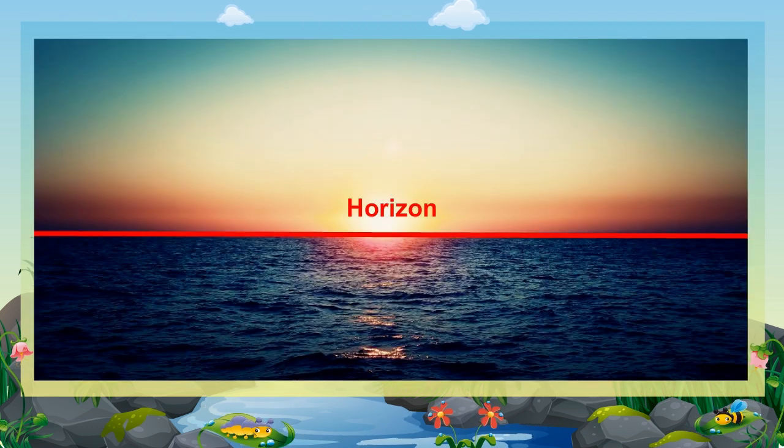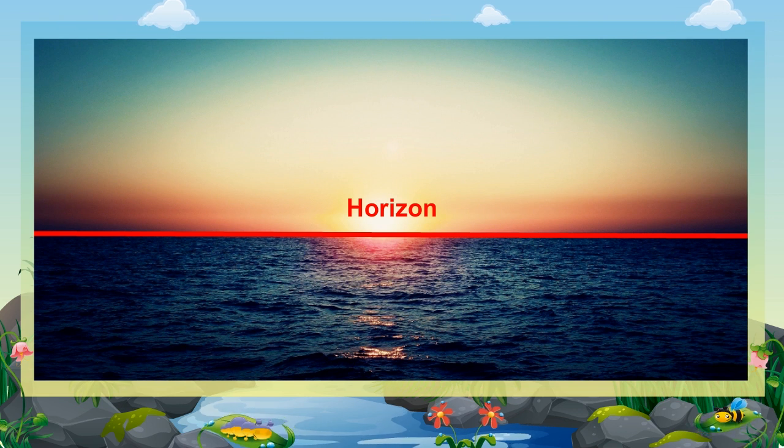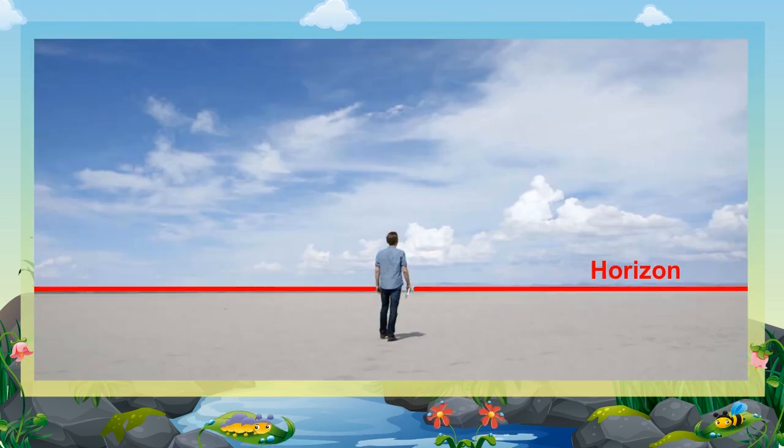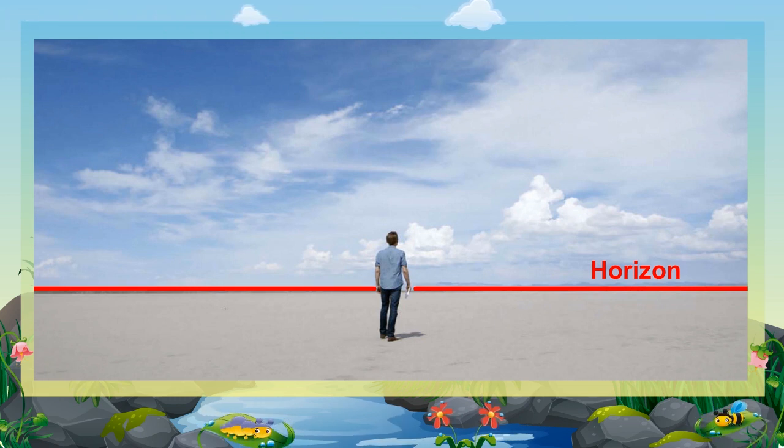Horizon. The horizon is the apparent line that separates the Earth from the sky. When one stands in an open ground and looks from a distance, the land and sky seem to meet. But in reality, they do not meet. This meeting line is called the horizon. Every time we come closer to the horizon, it seems to move further away.